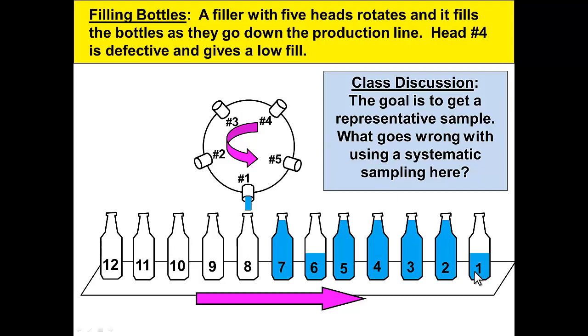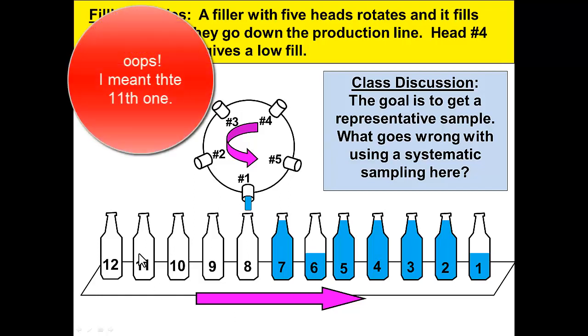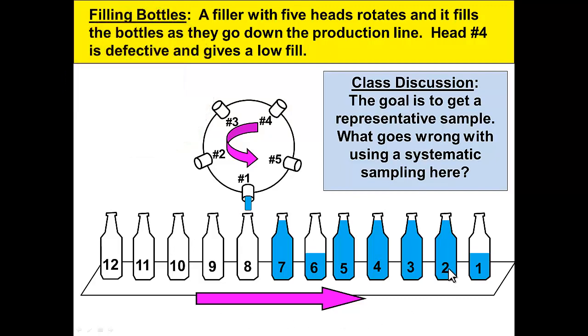If we do every fifth bottle, we could pick the first one and then five bottles later and get the sixth one which will also be under filled. The same thing would happen if we picked bottle number two and then bottle number seven and we would get none of the bottles that are under filled. So you have to be careful in setting up your systematic sampling and they're not always the best depending on your situation.